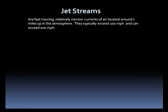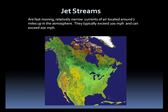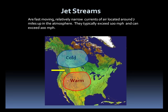Jet streams are fast-flowing, relatively narrow currents of air about seven miles above the Earth's surface. They form at boundaries of adjacent air masses with significant differences in temperature. They typically exceed 100 miles per hour, but can reach speeds in excess of 200.